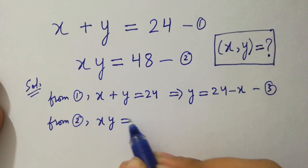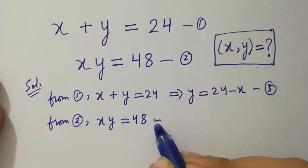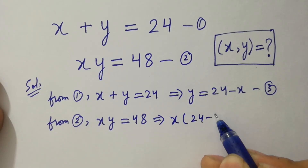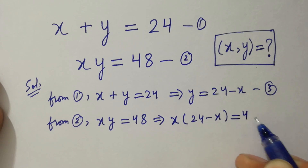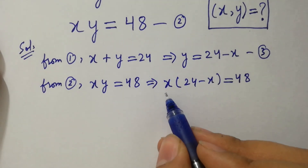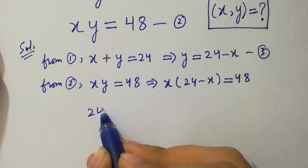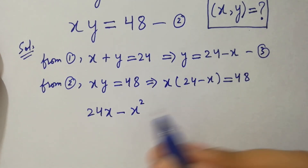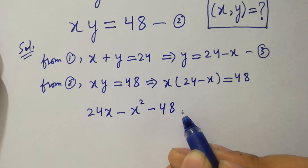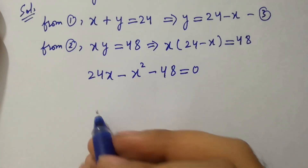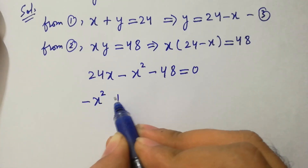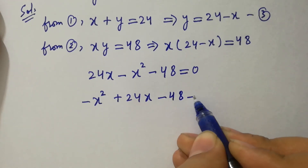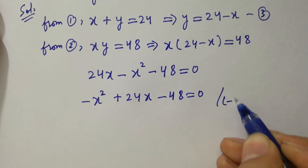From the second equation, x times y equal to 48. Substituting the value of y, we have x times (24 minus x) equal to 48. Expanding: 24x minus x squared equal to 48, so minus x squared plus 24x minus 48 equal to 0.